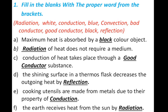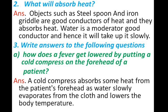Fourth blank: the shining surface in a thermos flask decreases the outgoing heat by reflection. Fifth blank: cooking utensils are made up from metals due to their property of conduction. Sixth blank: the earth receives heat from the sun by radiation.